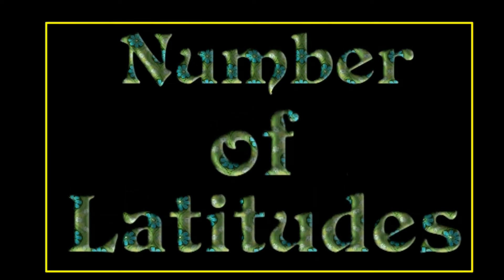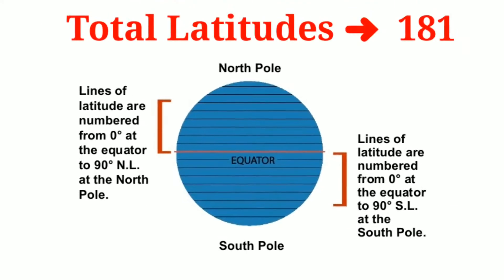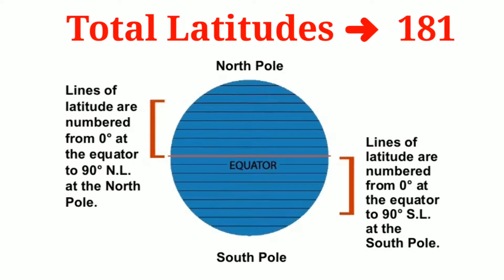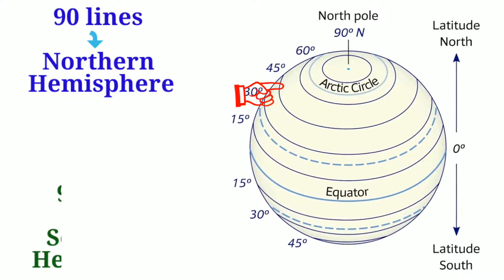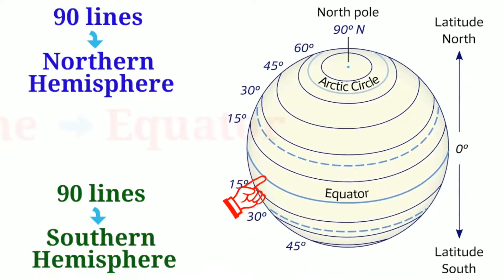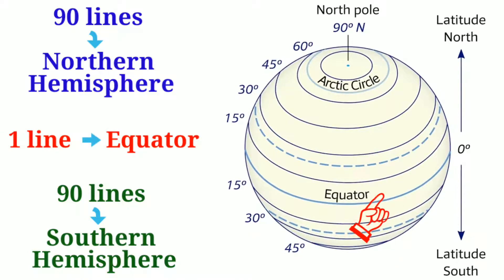Now, number of latitudes. There are 181 latitudes in all: 90 lines in the northern hemisphere, 90 lines in the southern hemisphere, and one line is of equator.